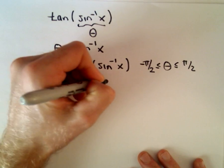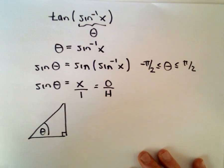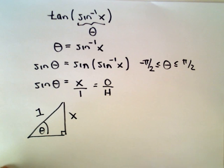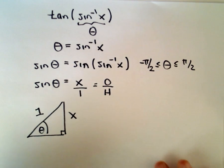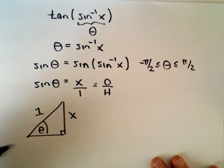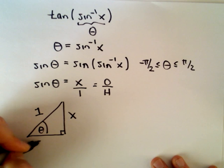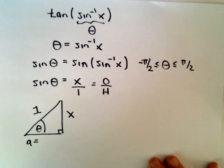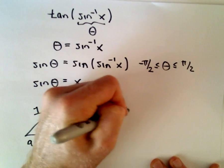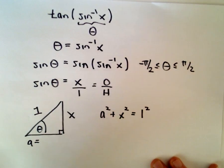And again, sine is just equal to the ratio of the opposite over the hypotenuse. So the opposite side is x, the hypotenuse is equal to 1. Now we'll just use Pythagorean theorem to find the missing side. We'll call it A for adjacent. So A squared plus x squared is going to equal 1 squared.